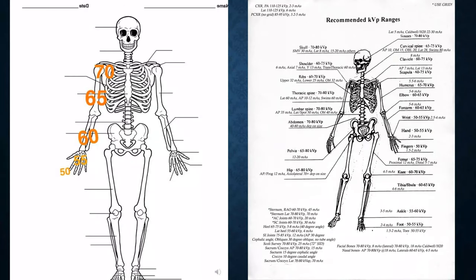Starting out with a technique, most books will have a general idea for a KV range. However, the mAs will be different due to many factors — the type of equipment, the generators, the speed. A lot of different things go into play, and that's why textbooks cannot give a reliable KV and mAs estimate.